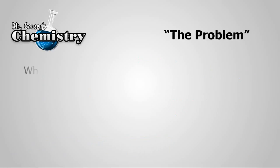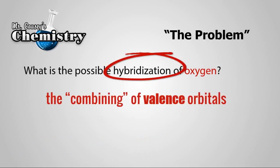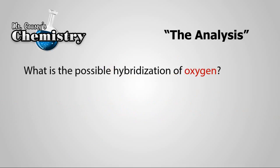Here's the problem. What is the possible hybridization of oxygen? And first we want to know what is hybridization? It's the combining of valence electrons or valence orbitals to create orbitals of equal energy. So let's analyze the problem.